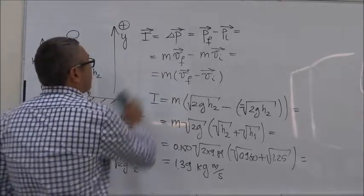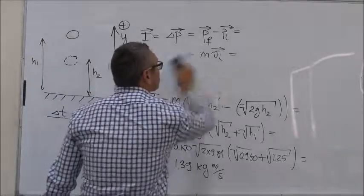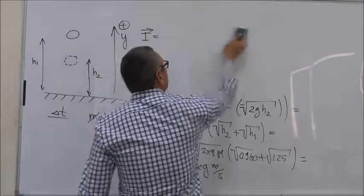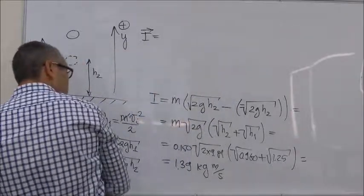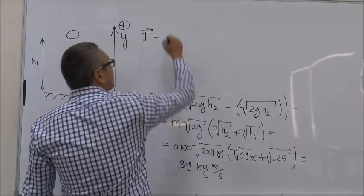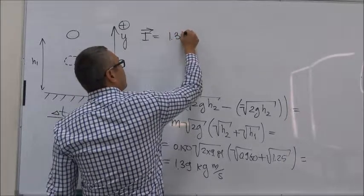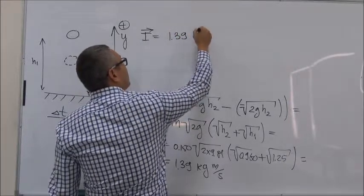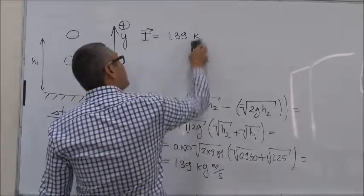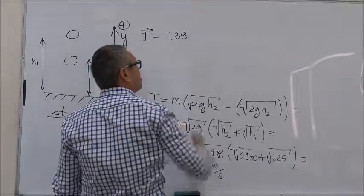Now, remember that impulse is a vector quantity. So we should say that the final answer for impulse is 1.39 unit vector J.